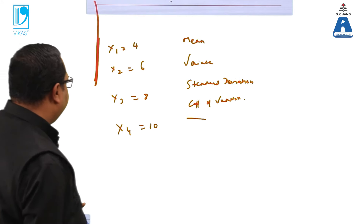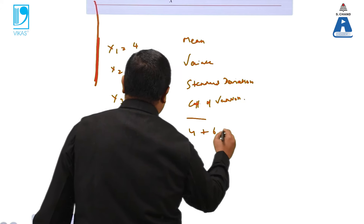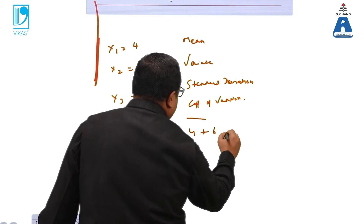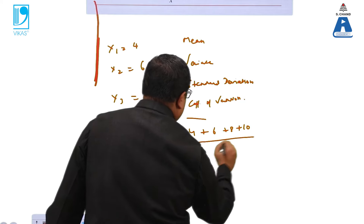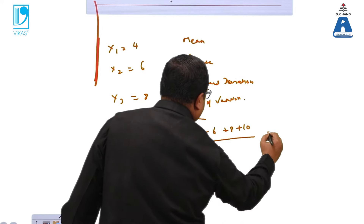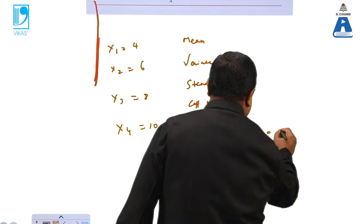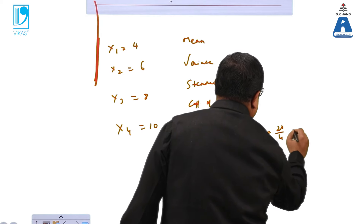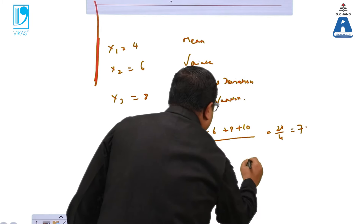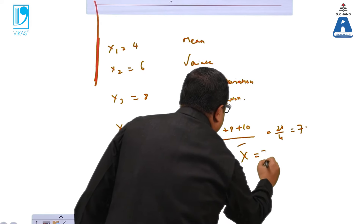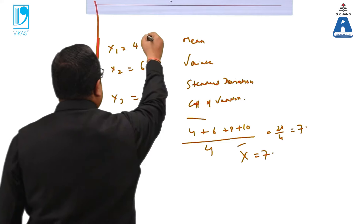The first step is to calculate the mean. Mean = (4 + 6 + 8 + 10) / 4 = 28 / 4 = 7. So x̄ = 7.